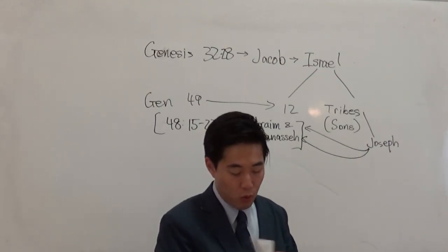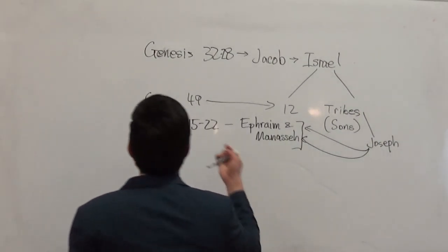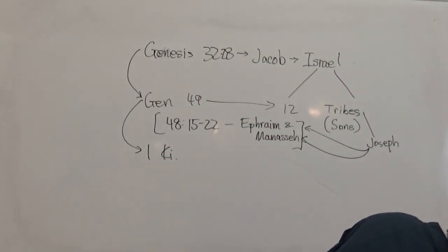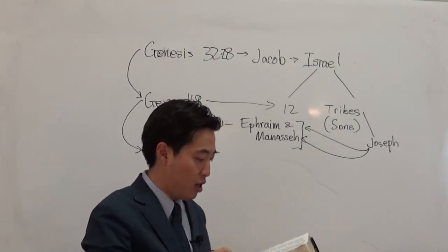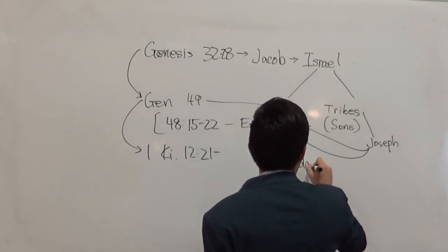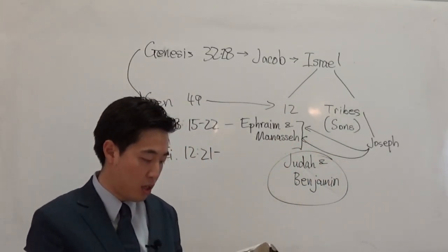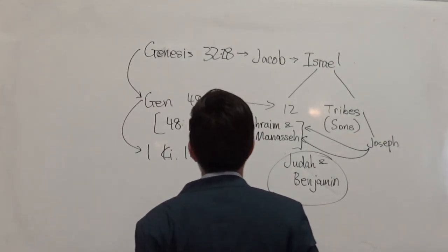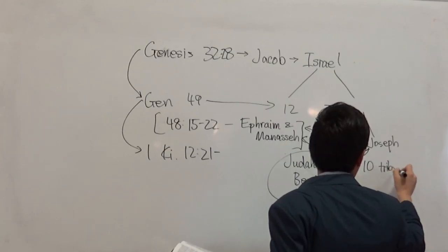1 Kings chapter 12 verse 21: when Rehoboam came to Jerusalem, he assembled the house of Judah with the tribe of Benjamin — those two together — forming one group against the house of Israel, which represents the remaining 10 tribes.